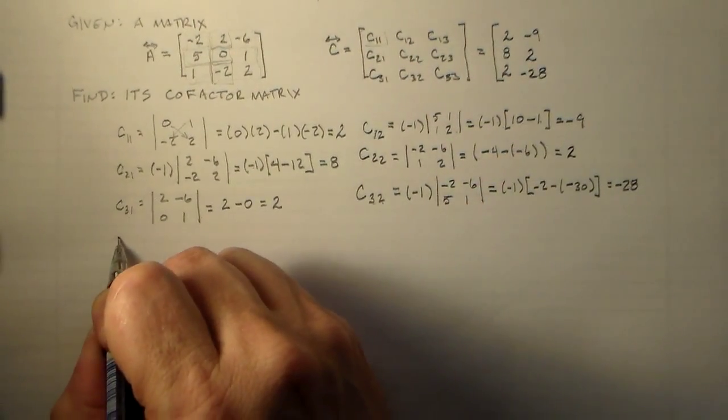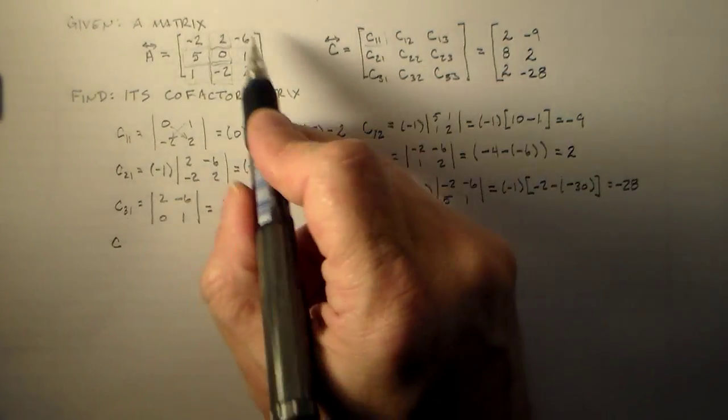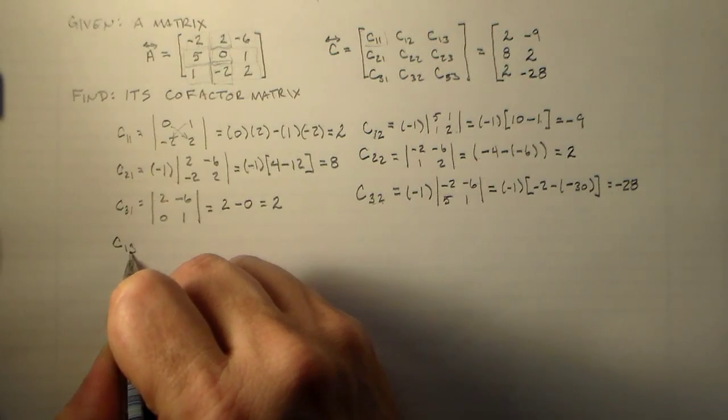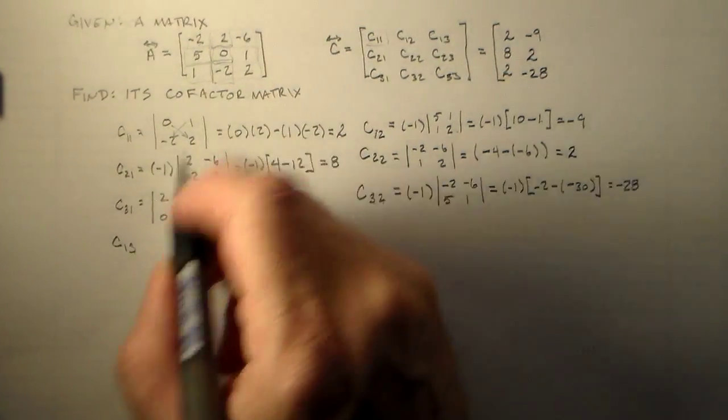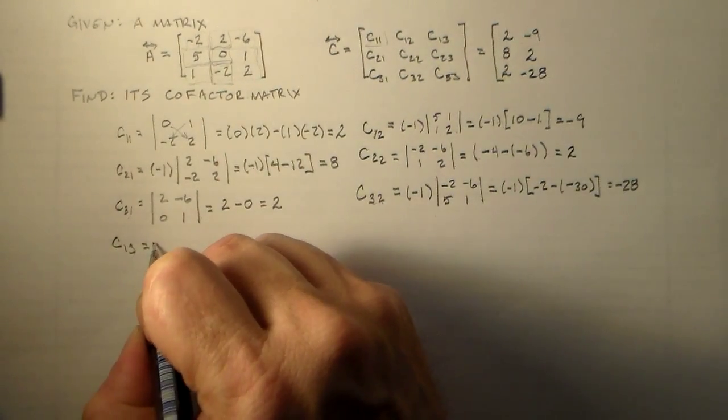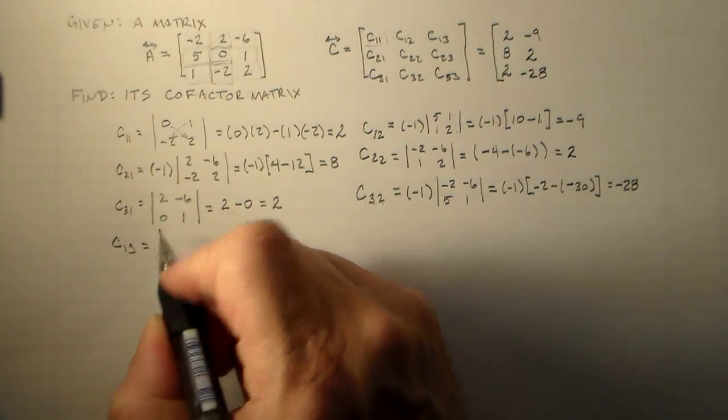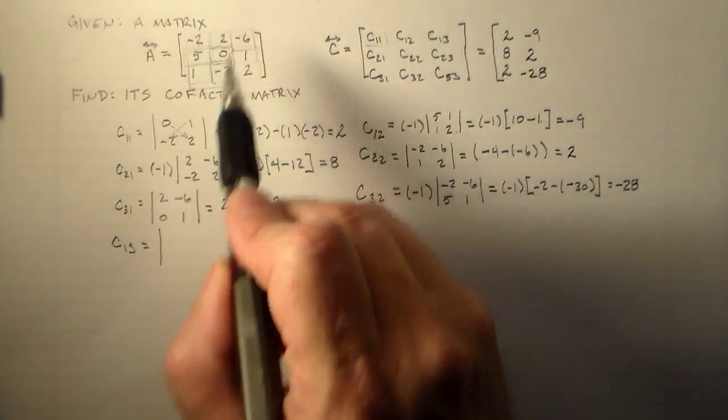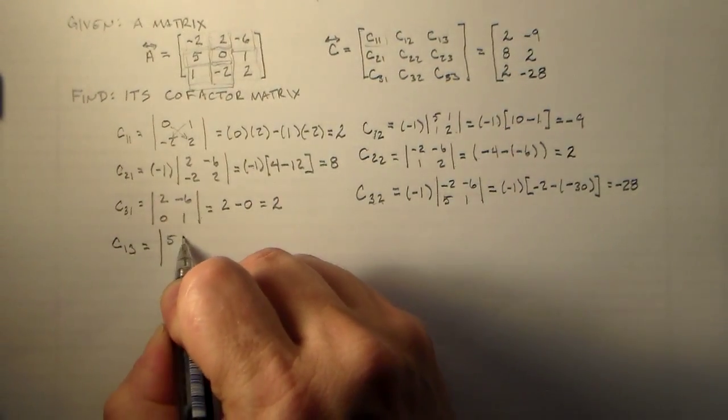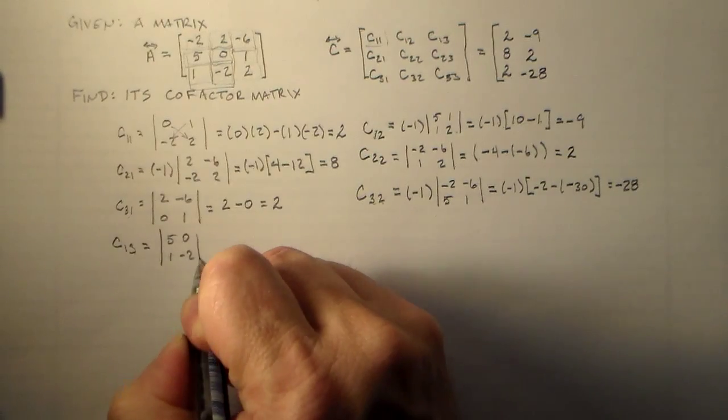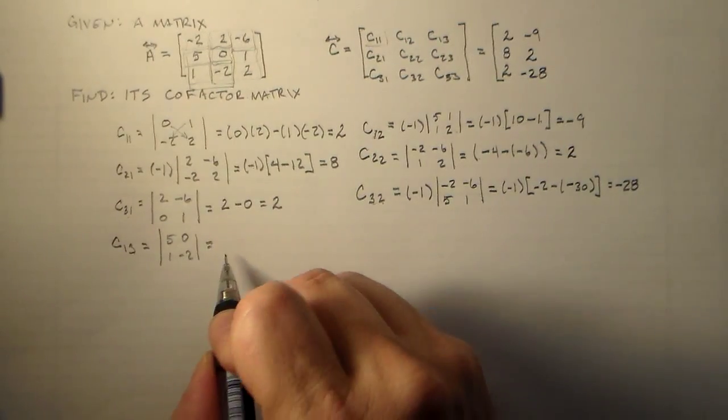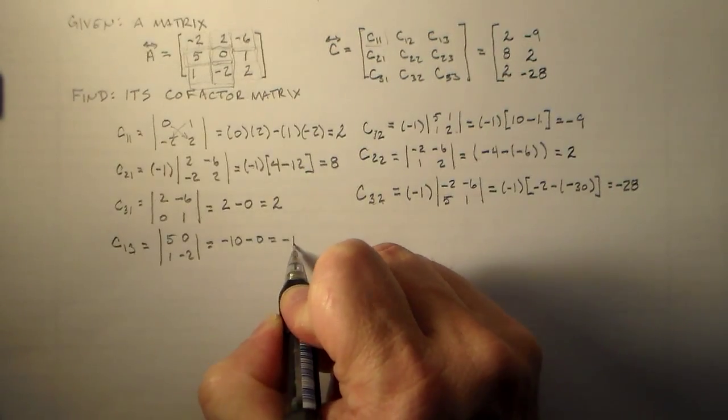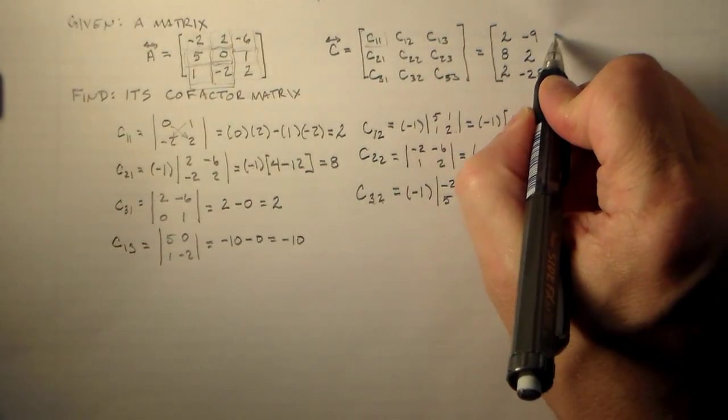So there we go. Almost there. One more column to do. So, first row, third column. That's 4. So we don't multiply by anything. We take this matrix here, that's opposite this minus 6. So we have 5, 0, 1, minus 2. 5 times minus 2 is minus 10. Minus 0 is minus 10. So we have minus 10.